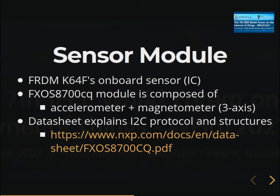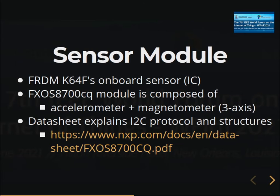The sensor at address 0x1D is the onboard sensor module called FXOS8700 — composed of a 3-axis accelerometer and a 3-axis magnetometer. You can do sensor fusion using both inputs. To implement the driver, consult the datasheet which explains all the structures, data, and how it works. You can also look at other existing drivers for inspiration if you don't know where to start.